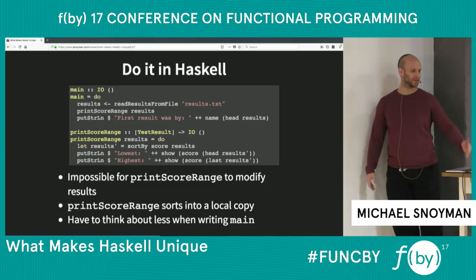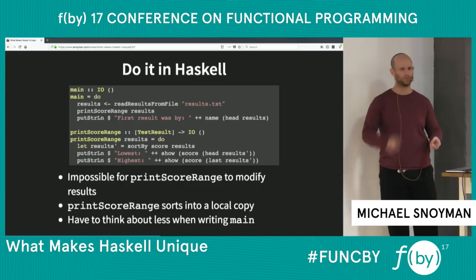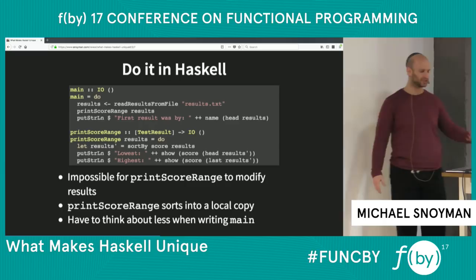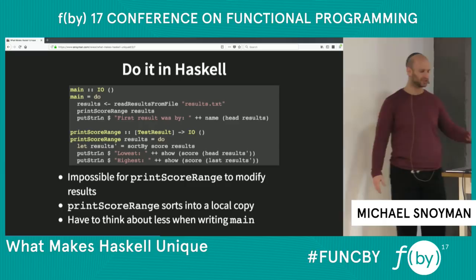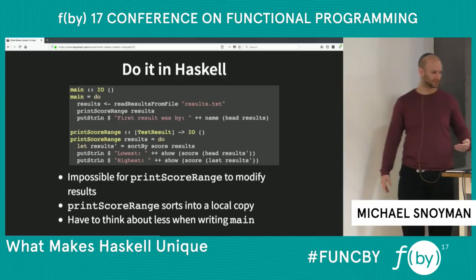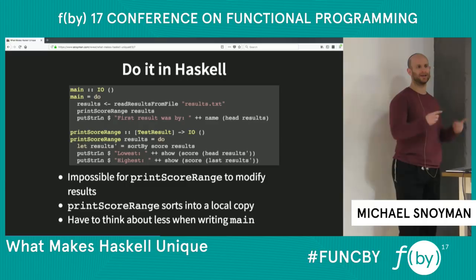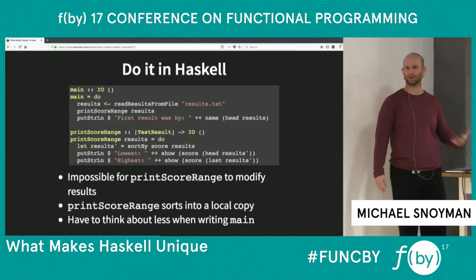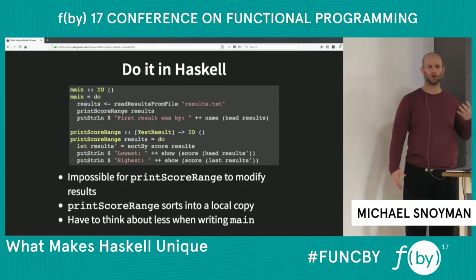Now let's do it in Haskell. We'll have similar imperative things — reading from a file, printing messages — all the imperative stuff people think you can't do in functional programming, but you can. The difference is that instead of passing a mutable vector, we're passing an immutable list. When `printScoreRange` sorts, it says `let results'` — it sets up a new value inside that function. There's no way it's going to modify the value that exists in the original main function. I can look at this one bit at a time, function by function, and understand what it does. Reasoning about code becomes much simpler with immutability.